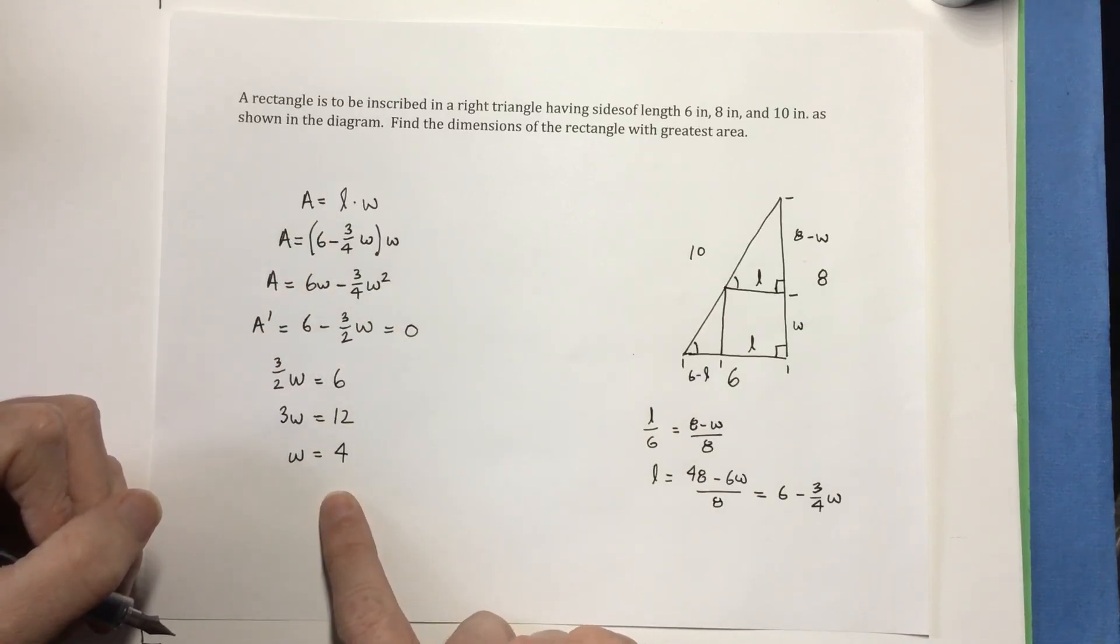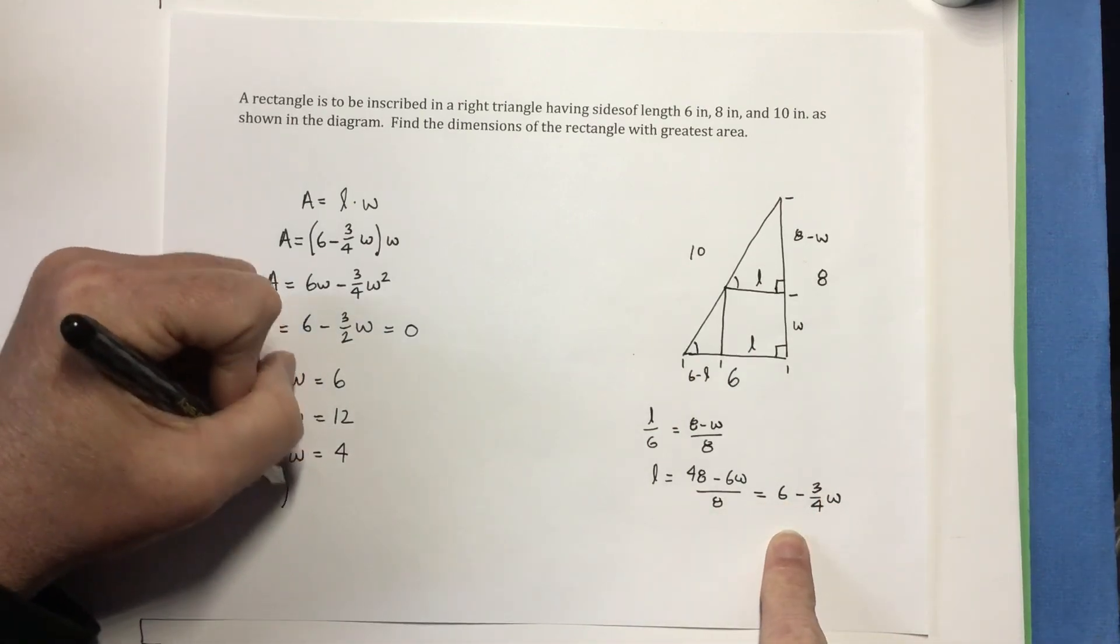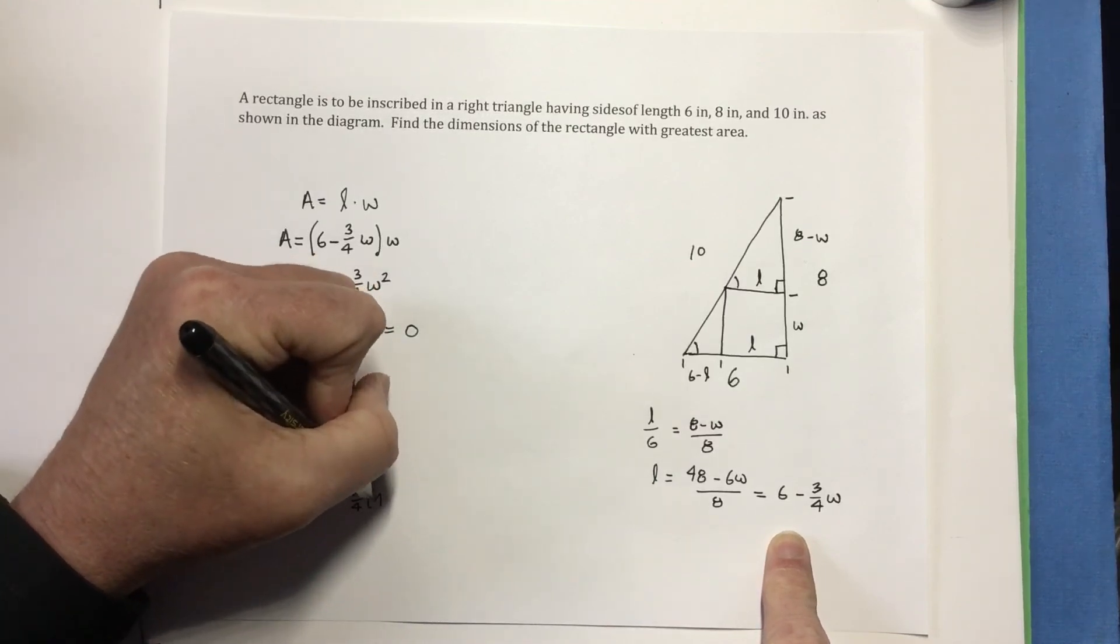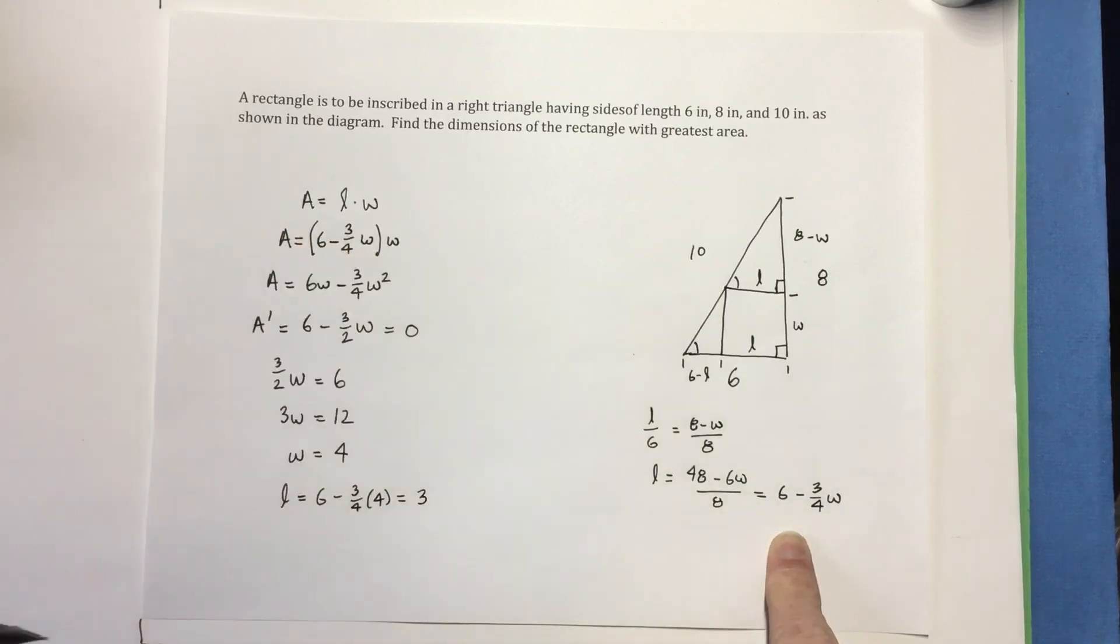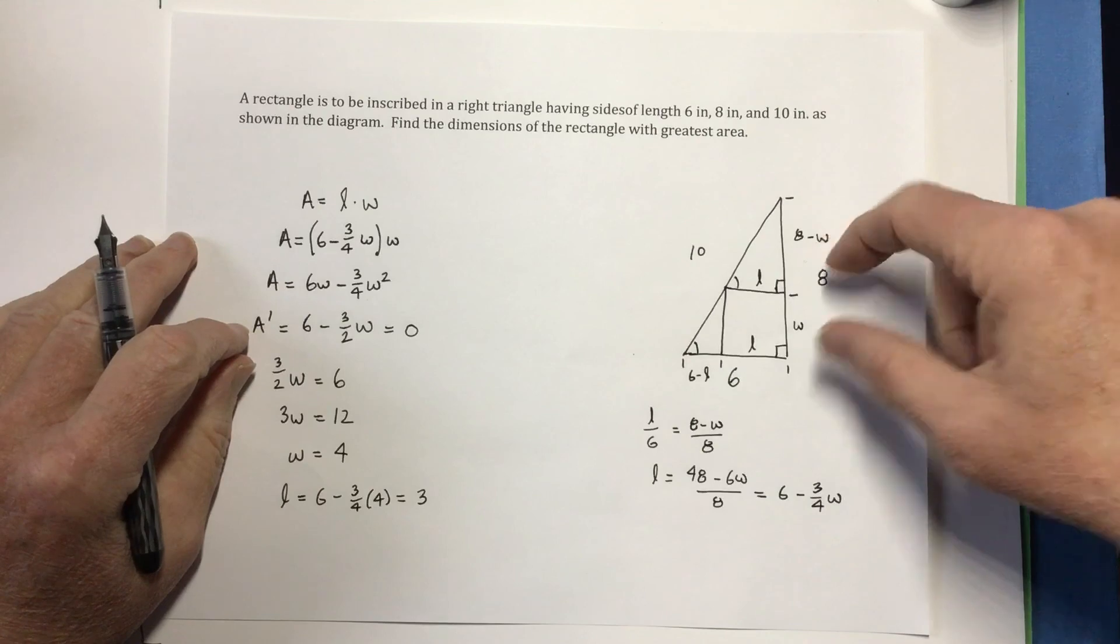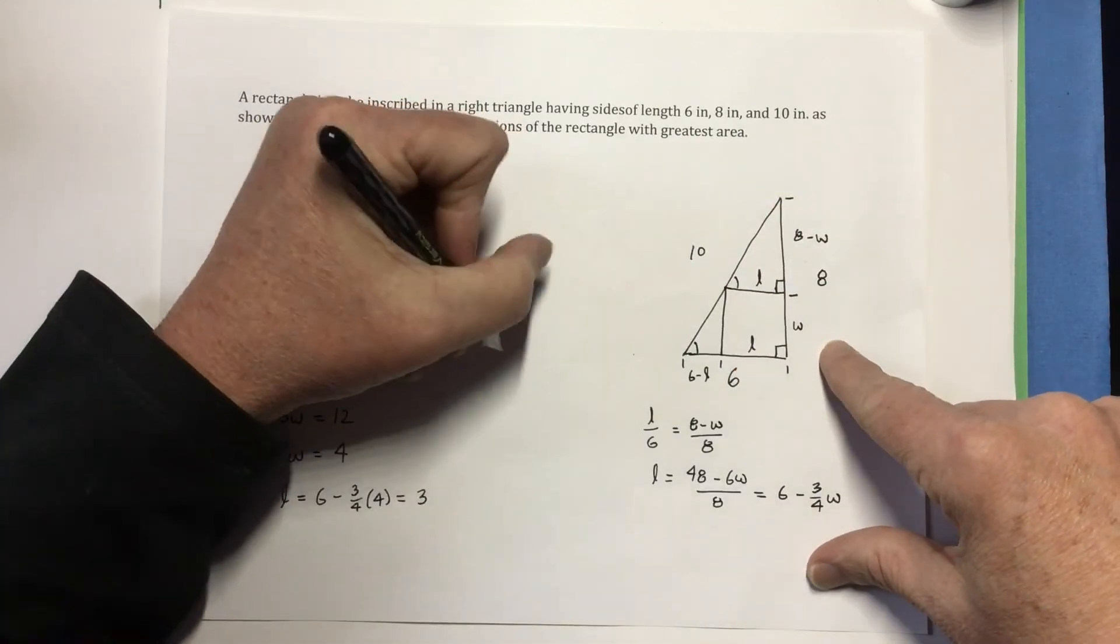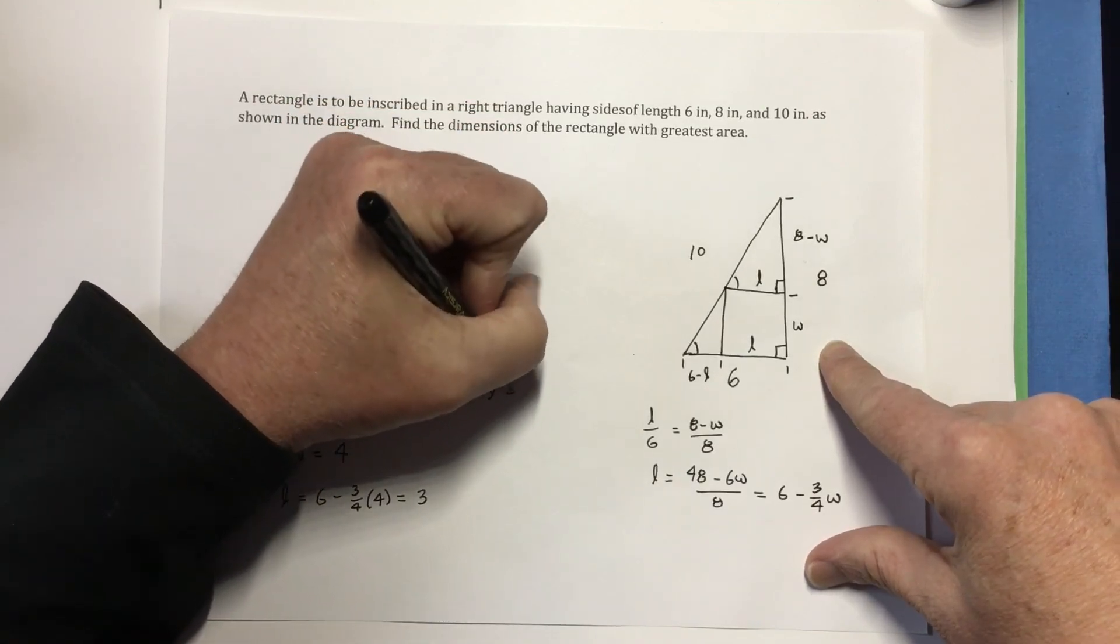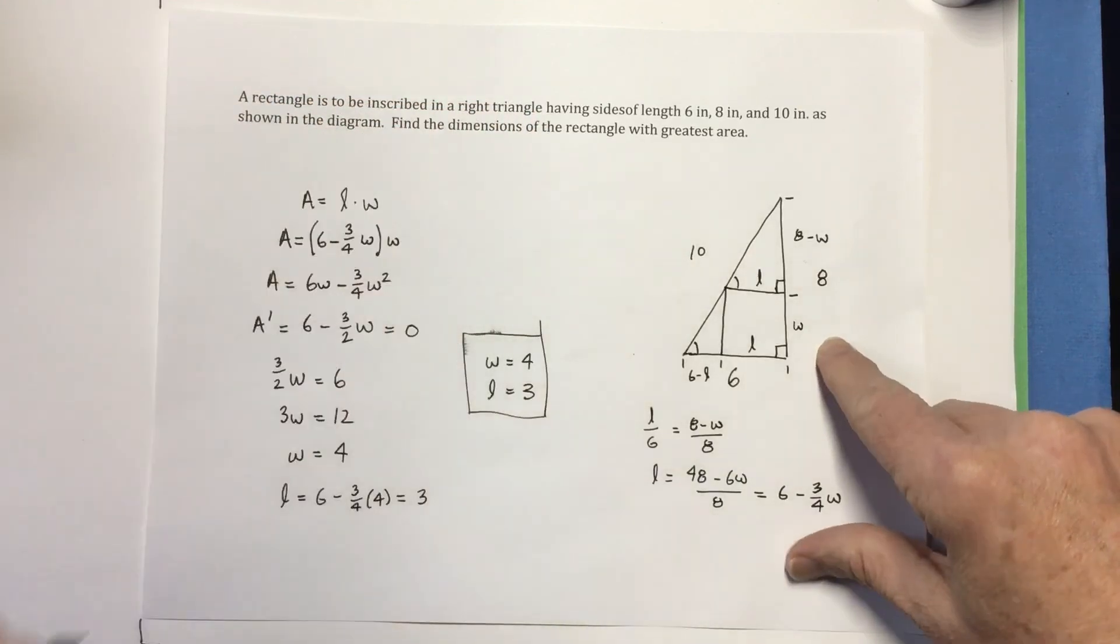Now if W equals 4, then I know that L equals 6 minus 3 fourths times W, which is 4. The fourths cancel out to 6 minus 3, which is 3. So the dimensions of the greatest area that can be inscribed in there will be the situation where W is 4 and L is 3.